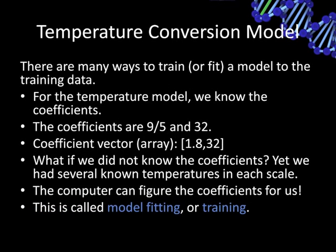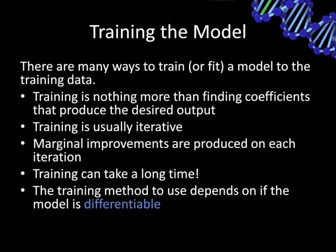There are many ways to train or fit a model to the training data. For the temperature model, we know the coefficients: 1.8 and 32. Those are the values we would adjust if we did not know them. We would initially assign random numbers and then adjust them using fitting or training algorithms. Training is really nothing more than finding the coefficients that produce the desired output. It is usually iterative — you start with random coefficients and refine them over and over until you get closer to the desired output. Marginal improvements are produced with each iteration, and training can take a very long time.